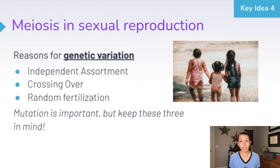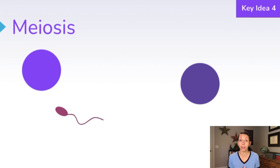The process of meiosis is important in sexual reproduction because it provides genetic variation of offspring, and genetic diversity is important for the survival of a species. In order to get that egg and that sperm, we have to go through meiosis first. Then those two can undergo fertilization to produce a zygote, which is a fertilized egg cell and now a diploid cell.